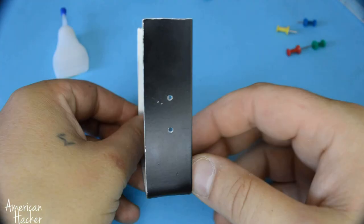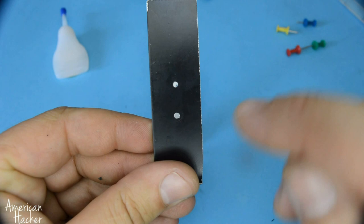The metal piece we gonna bend in a U shape, and on the sides we gonna drill small holes for push pins.